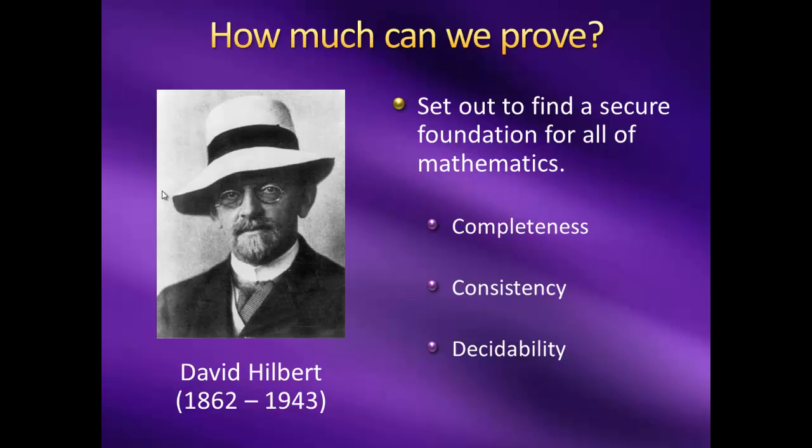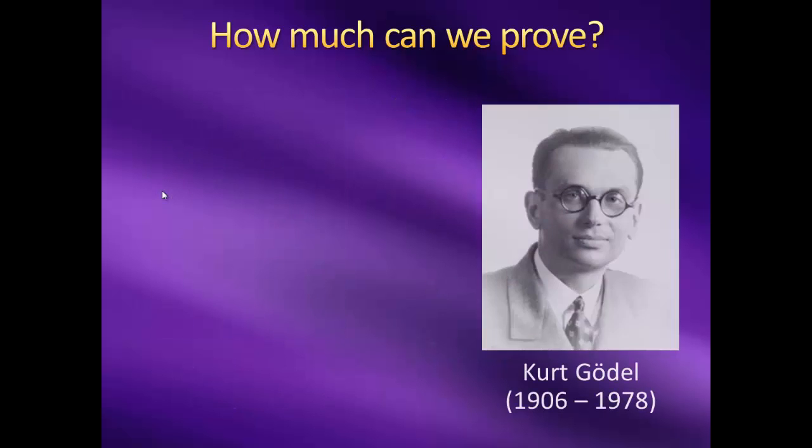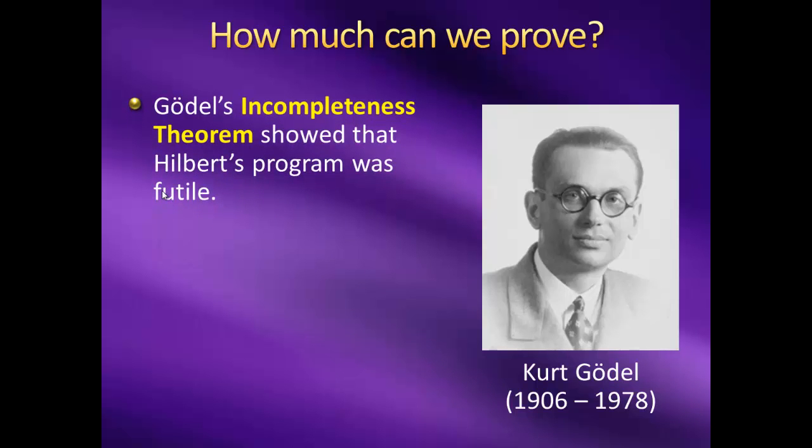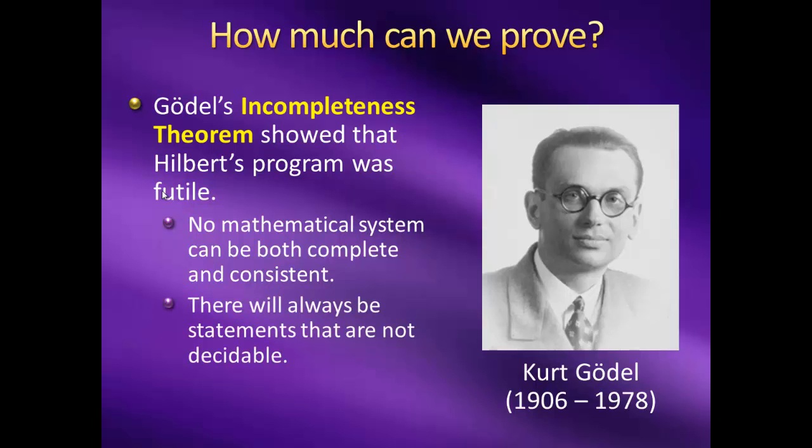Unfortunately, Hilbert's program, while noble in its effort, was soon shown to be futile, by Austrian mathematician Kurt Gödel. Gödel came up with what were called the incompleteness theorems, which effectively showed that it was impossible to come up with a mathematical system that is both complete and consistent using a finite set of axioms. As it turns out, in any system we can come up with, there will always be certain statements that are not decidable given our axioms we've chosen. These statements may be true or false, but the axioms have no way of telling us which it is.